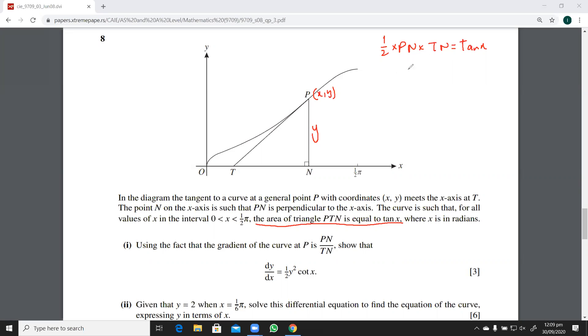Now I can change this PN with the y, so this becomes half y into TN that is equal to tan x. Let's see what's next. Using the fact that the gradient of the curve at P is PN over TN, we know that PN is y, so we can say that dy/dx equals y over TN.